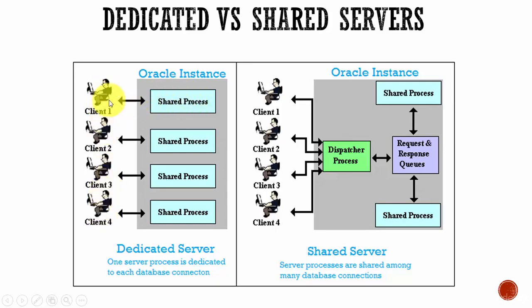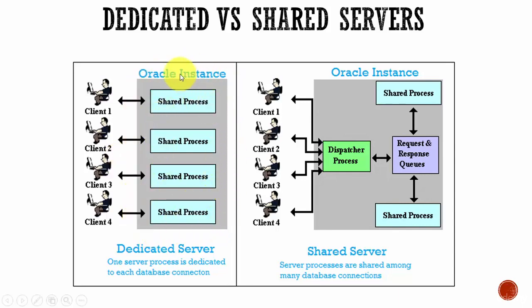We have four users running and four processes, each communicating with their own process. If we have to create all these processes in the Oracle instance, it obviously consumes memory. As the number of concurrent connections increases, the amount of memory required by all these dedicated server processes increases. That means we need to have a lot of physical memory — big enough so that all these processes can be created.